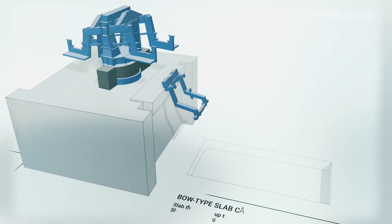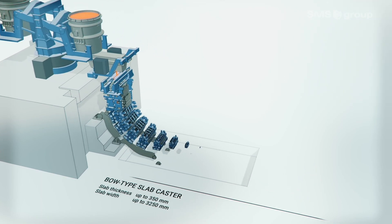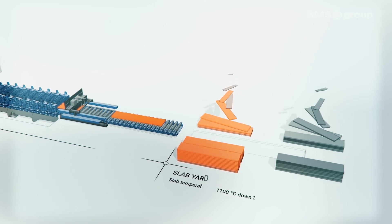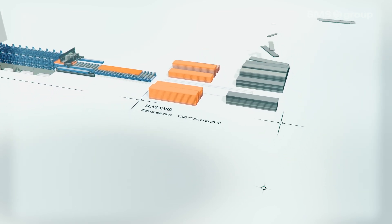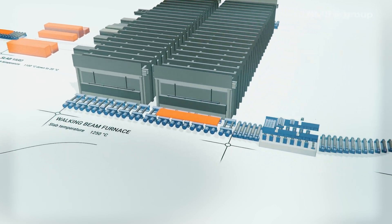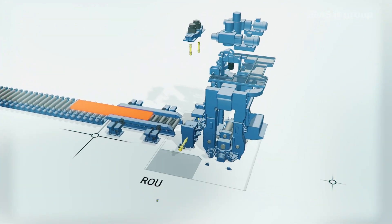The optimum layout for these plants includes a bow type slab caster, a slab yard for cold or warm charging, a walking beam furnace, and one or more roughing stands.